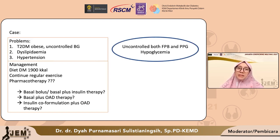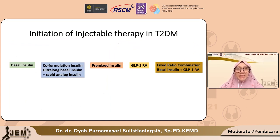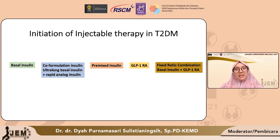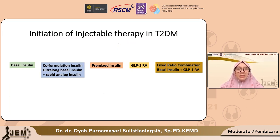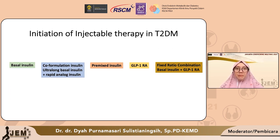Selain itu pasien juga ada riwayat hipoglikemi, dan ini merupakan salah satu yang perlu kita pertimbangkan saat memilih terapi injeksi. Untuk inisiasi terapi injeksi pada pasien diabetes tipe 2, ada beberapa pilihan: kita bisa menginisiasi dengan basal insulin, dengan insulin co-formulation yaitu gabungan dari ultralong basal insulin dan rapid analog insulin, atau dengan premix insulin yang merupakan gabungan dari insulin NPH dengan insulin rapid analog. Kita juga bisa menginisiasi dengan GLP-1 reseptor agonis, atau kombinasi fixed ratio combination yang merupakan basal insulin dan GLP-1 reseptor agonis.